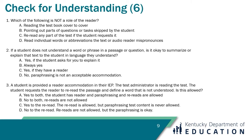Check for understanding number six, question one: which of the following is not a role of the reader? A — reading the test book cover to cover. B — pointing out parts of questions or tasks skipped by the student. C — reread any part of the test if the student requested. D — read individual words or abbreviations the text or auto reader mispronounces. The answer is B. As a reader, you are not allowed to point out mistakes or errors a student has previously or is actively making. Your only allowed job is to read the test booklet for the student.